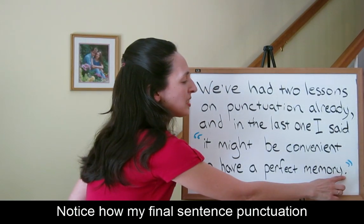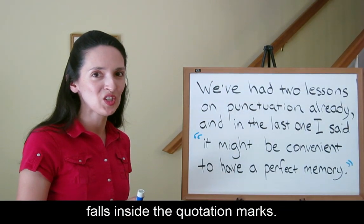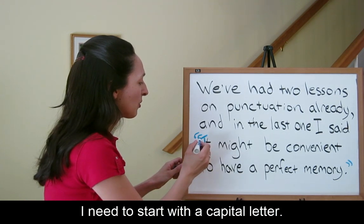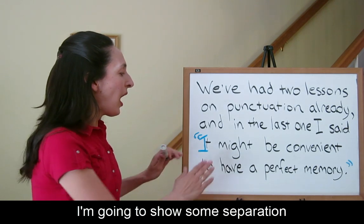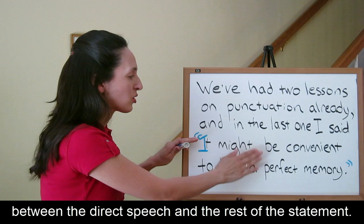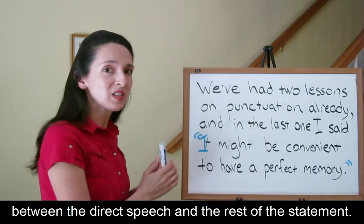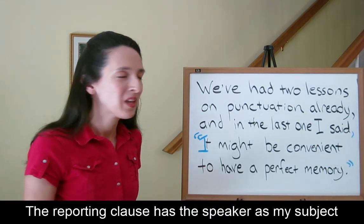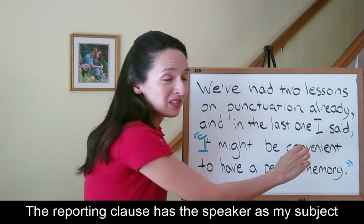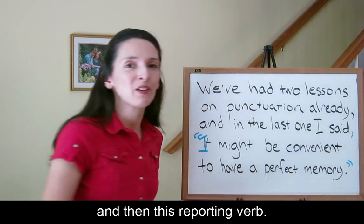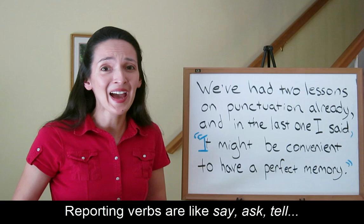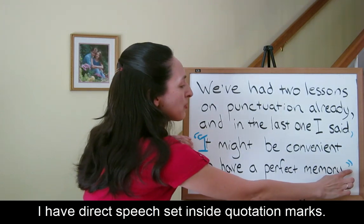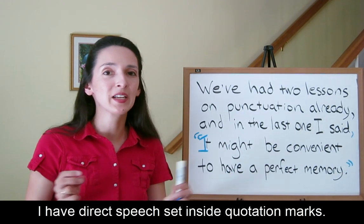Notice how my final sentence punctuation falls inside the quotation marks. Because this is a statement, I need to start with a capital letter. I'm going to show some separation between the direct speech and the rest of the statement. I'm going to use a comma after my reporting clause. The reporting clause has the speaker as my subject and then a reporting verb. Reporting verbs are like say, ask, tell. So we have a reporting clause, comma, and then direct speech set inside quotation marks.